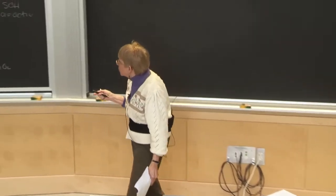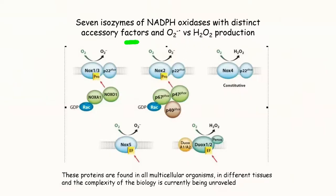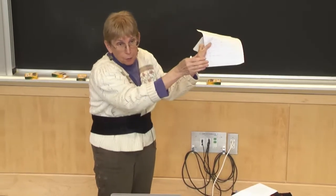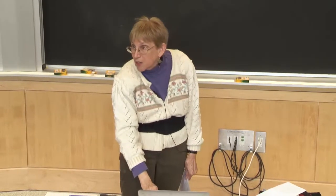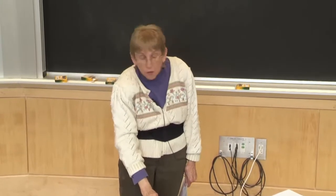NOX has seven isozymes. We focused previously on the phagosome oxidase, and now we're focusing on NOX2 again. Each isozyme affects different factors inside the cell. Many growth factors and cytokines use these signaling pathways involving NOX. The model is that sulfenylation is also important in many of them, but in many cases that remains to be established.